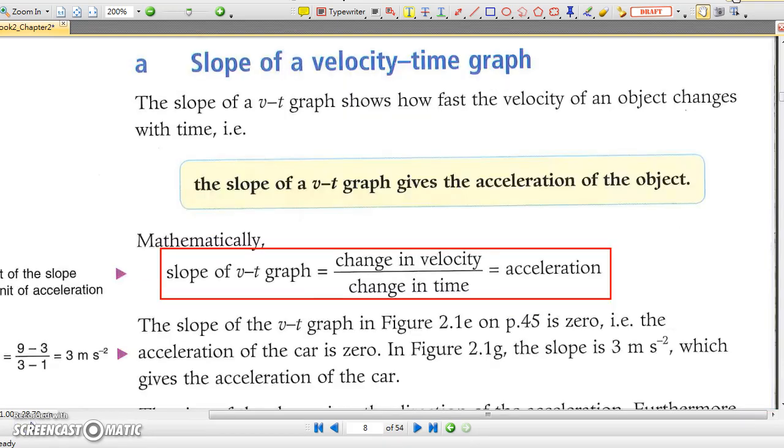A. Slope of a velocity time graph. The slope of a velocity time graph equals change in velocity over change in time. Hence it is, by definition, the acceleration of the motion.